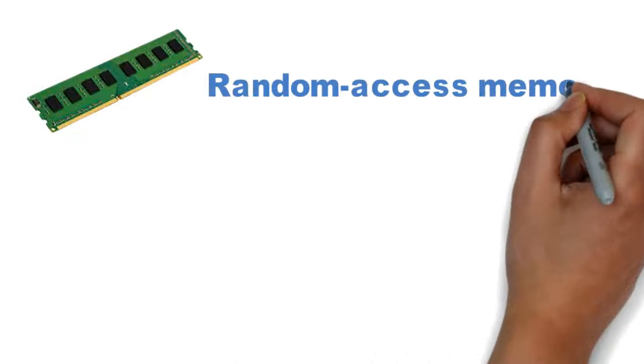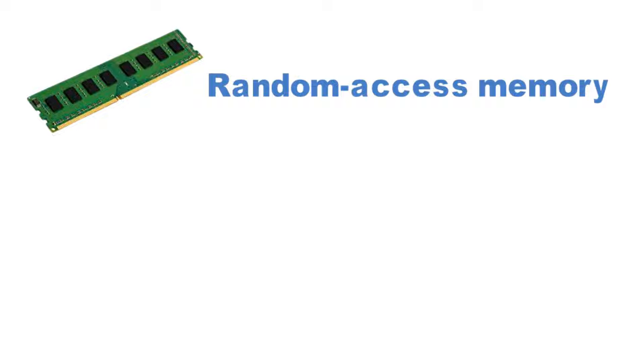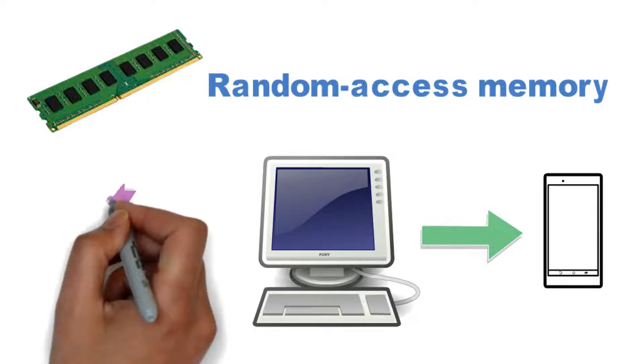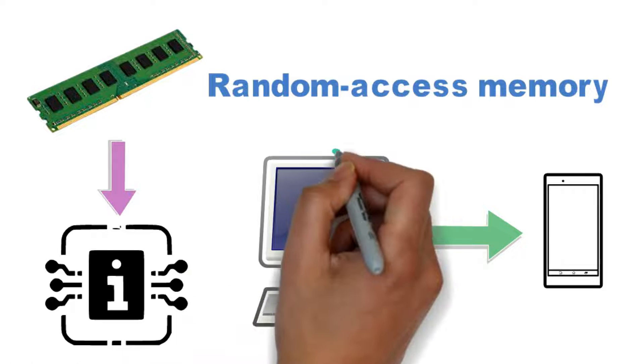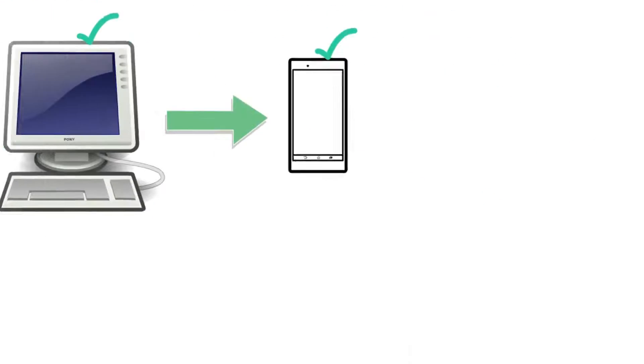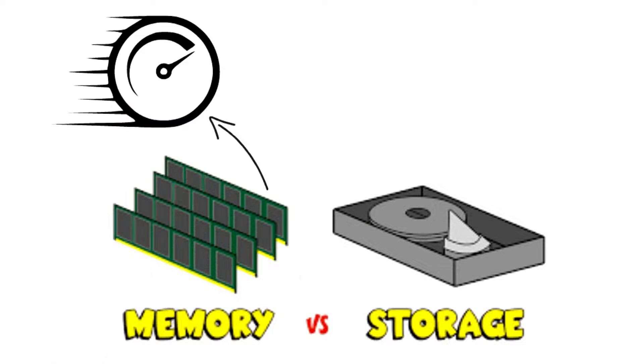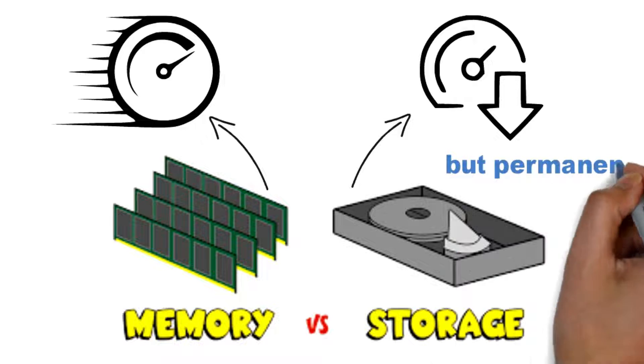RAM is Random Access Memory. It's an essential component in all devices, from PCs to smartphones. RAM temporarily stores all the information a device needs, both right now and imminently. Accessing data in RAM is fast, unlike hard drives that are slower but provide long-term storage.